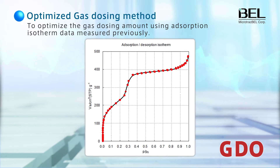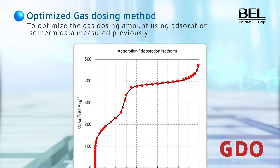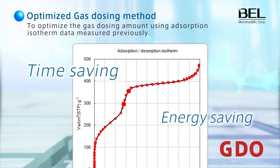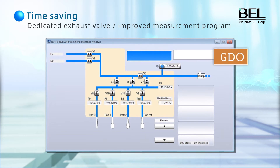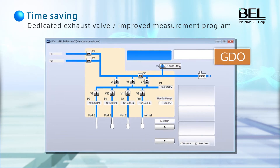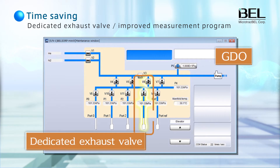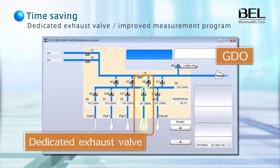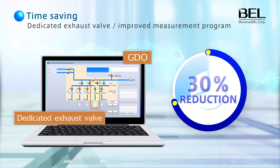When measurement points are insufficient, you can add them manually. The dedicated exhaust valve, GDO function, and new control software drastically shorten measurement times by up to 30%.